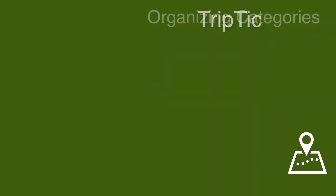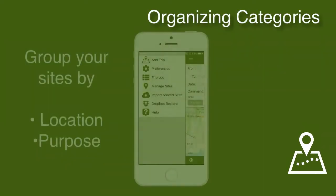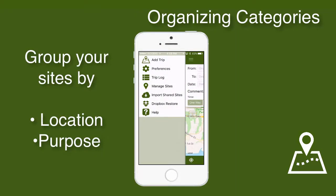In Triptych, you can create site categories so that you can group all of your sites by city or purpose. This is particularly useful when planning a trip ahead of time when you know some of the sites that you wish to visit.